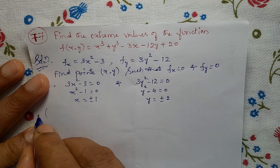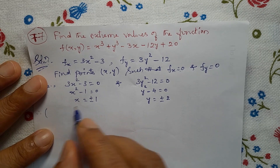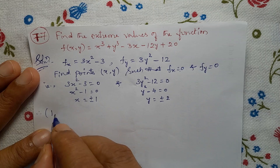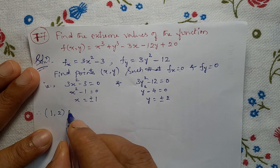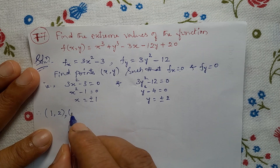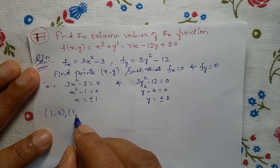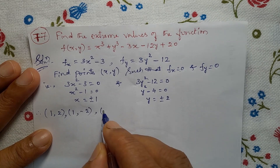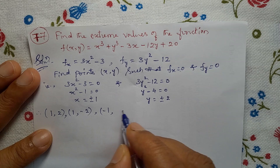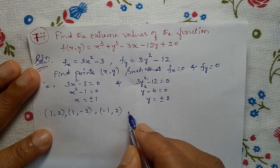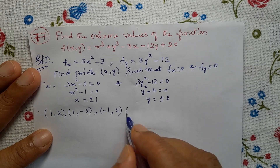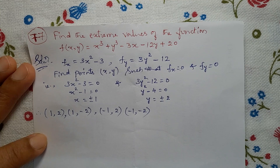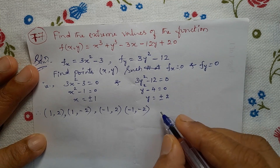The stationary points are: (1, 2), (1, -2), (-1, 2), and (-1, -2). These are the four stationary points.